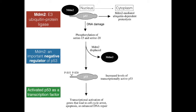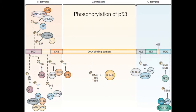Some other stresses localize P53 to the nucleus, thus avoiding interaction with MDM2 and degradation altogether. This is just one example of a mechanism that stabilizes P53, elucidating that there are other pathways involved in its stabilization.